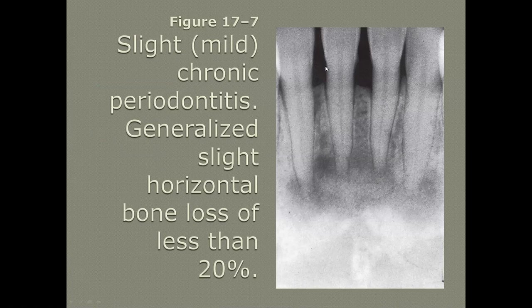This is showing slight periodontitis — you're looking at where the CEJ is, the bone should be about one to two millimeters from there, and then there's about one to two millimeters of bone loss from that point. Some might call it slight, some moderate — you both could be right. We take a look at the rest of the mouth, the patient's age, mobility, and any other distinguishing factors to make that determination.